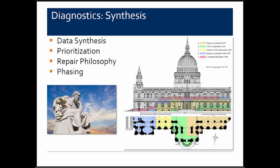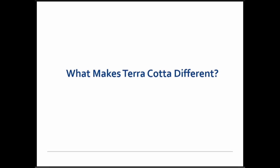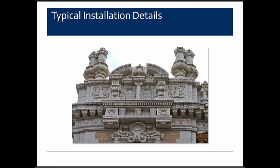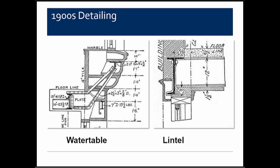Once assessment is complete, there's evaluation of the gathered information — synthesis, prioritization of what needs to be done based on finances or other criteria, determining the approach for restoration or repair, and whether phasing is necessary. What makes terracotta different really comes down to its installation details — the armature and anchorage system supporting the material, which is somewhat similar to stone but with significant differences.